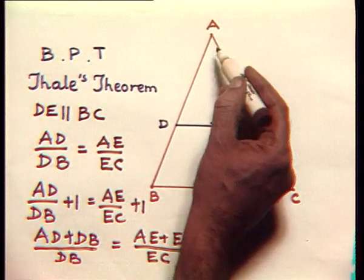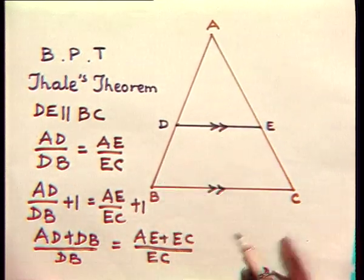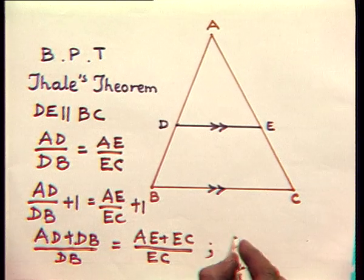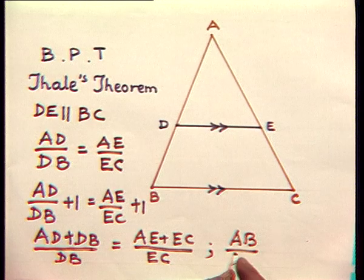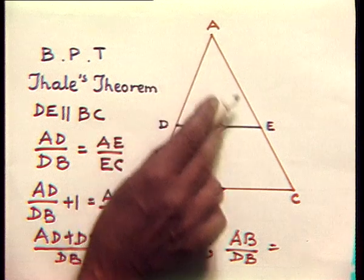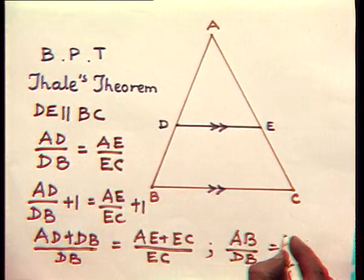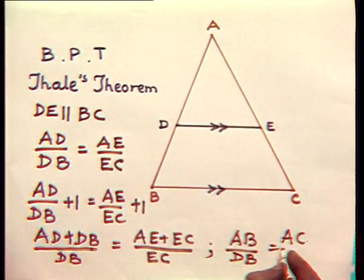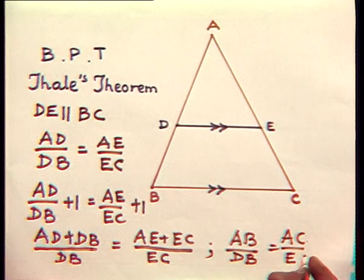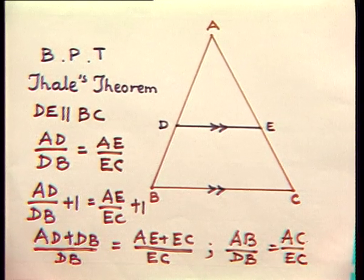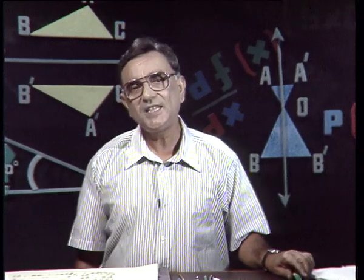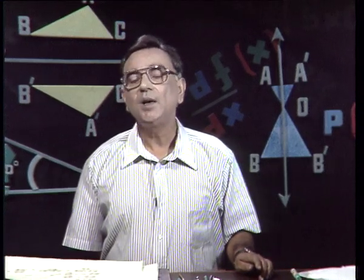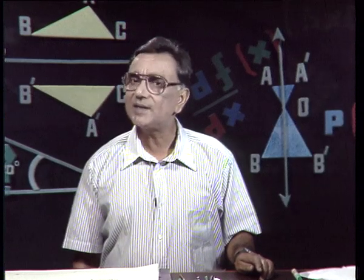AD plus DB is nothing else but AB upon DB, that is equal to AE plus EC upon EC. And now we shall be making use of this basic proportionality theorem in having some important constructions.